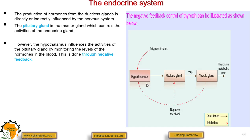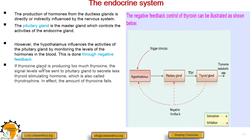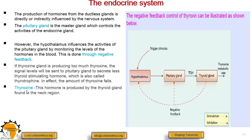In the negative feedback mechanism, if the thyroid gland is producing too much thyroid hormone, signals will be sent to the pituitary gland to secrete less thyroid stimulating hormone, which is called thyrotropine. In that case, the level of thyrotropine will fall, reducing stimulation of the thyroid gland.